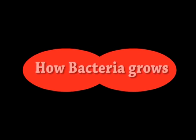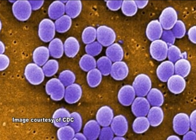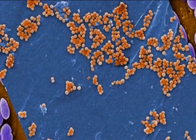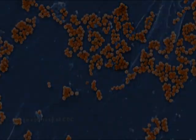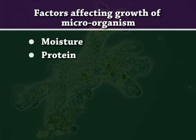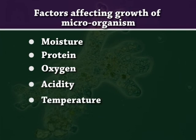How bacteria grows: bacteria need different conditions to grow and survive. Factors affecting growth of microorganisms are moisture, protein, oxygen, acidity, and temperature.